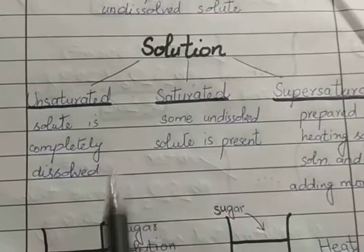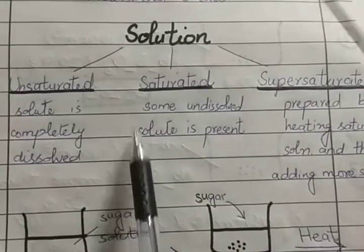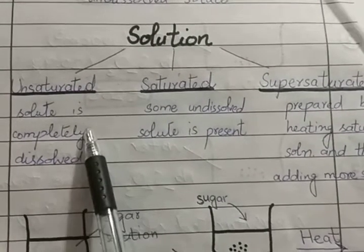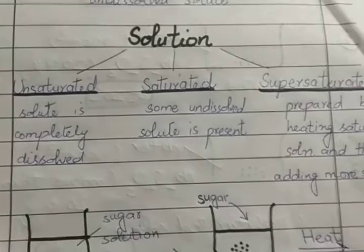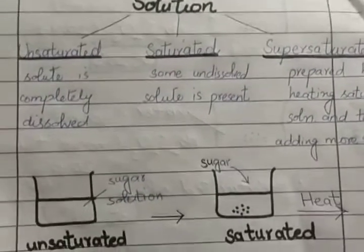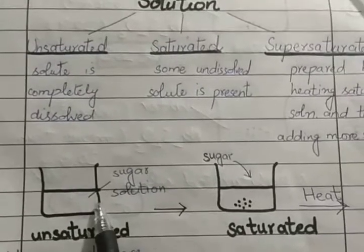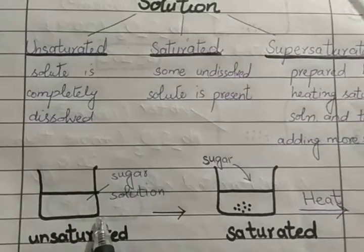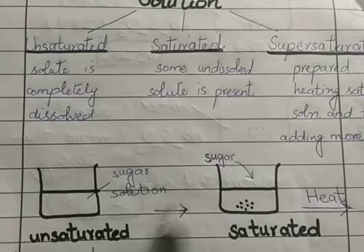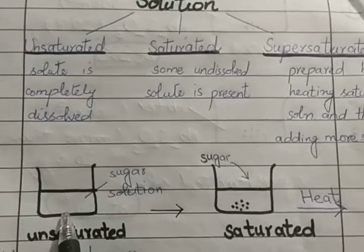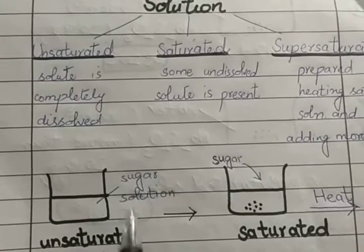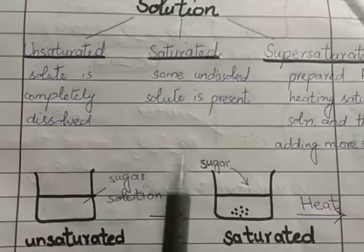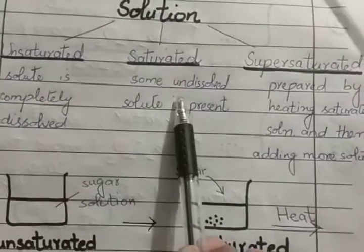Today we will study three types: unsaturated, saturated, and supersaturated. An unsaturated solution is one in which the solute is completely dissolved. For example, if sugar is completely dissolved in water, we say it is an unsaturated solution.